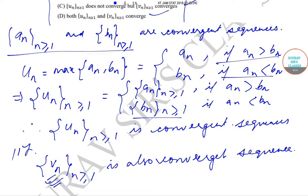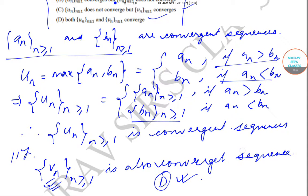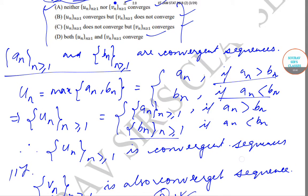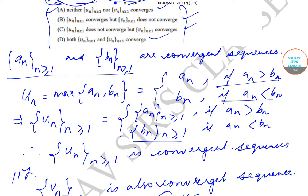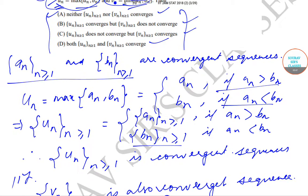Therefore, option D — both u_n and v_n converge — is the correct answer. Today we have solved question number 3 from the IIT Jam Mathematical Statistics question paper of 2018. We will be solving the next questions in subsequent videos. Till then, keep watching Soropsis classes for more solutions and content. Thank you very much.